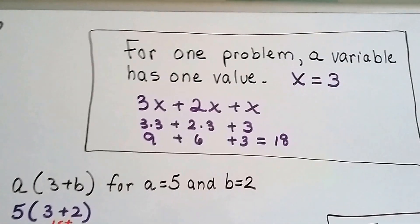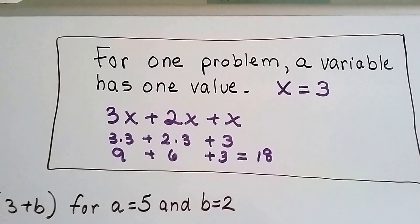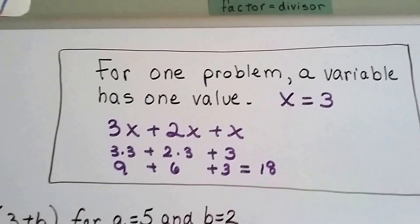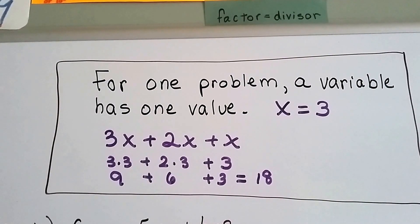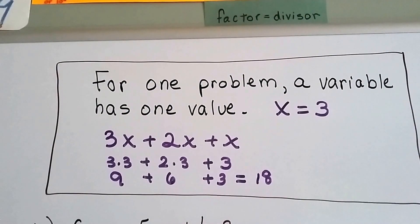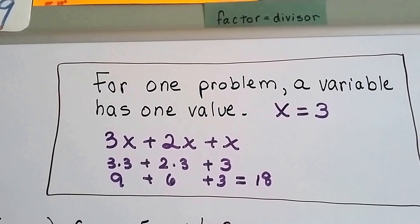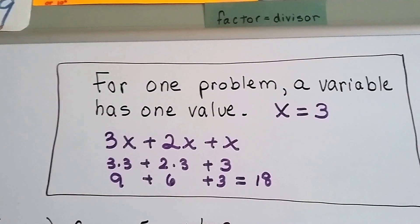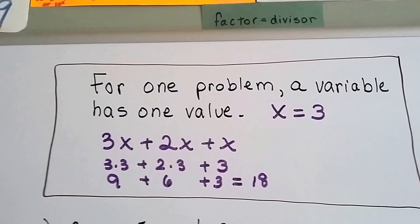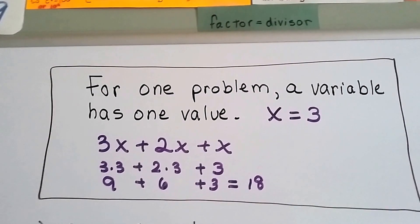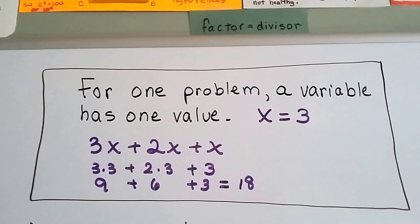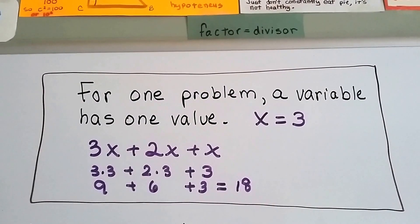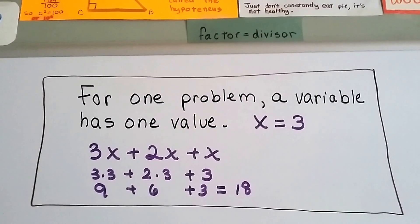One thing to remember is, for one problem, a variable has one value. If x equals 3, that's all it equals in that problem. If we had 3x plus 2x plus x, and x equals 3, that would be 3 times 3 plus 2 times 3 plus 3. If a variable has a value in a problem, it has that value through the entire problem. It might have a different value in another problem, but for that problem, it has one value.